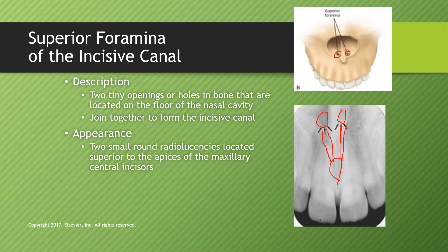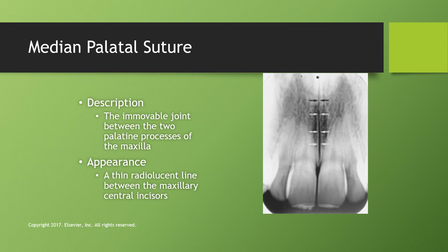The superior foramina of the incisive canal are two tiny openings or holes in the bone located on the floor of the nasal cavity that join together to form the incisive canal. They appear as two small round radiolucencies right above the anterior nasal spine — when you see that duck-foot structure, the two radiolucencies between the feet of the duck are the superior foramina. The median palatal suture is the immovable joint between the two palatine processes of the maxilla, appearing as a radiolucent line between the maxillary central incisors.